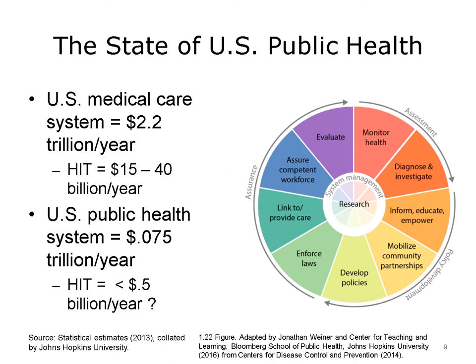For this reason, if one wants to impact the health of populations using public health-oriented approaches, there is no other way to achieve this objective without encompassing the entire health care system, including both medical care and public health. The classic domains of traditional public health services work together with research at their core. The subdomains of assessment include monitor health and diagnose and investigate services. Policy development includes services to inform, educate, and empower, mobilize community partnerships, and develop policies. Assurance services include enforce laws linked to provide care, assure competent workforce, and evaluation.